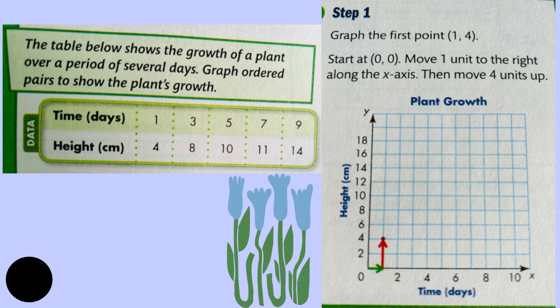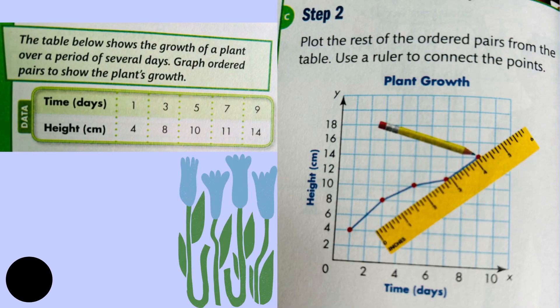Step number one: graph the first point, that is (1, 4). Start at (0, 0), move one unit to the right along the x-axis, then move four units up.